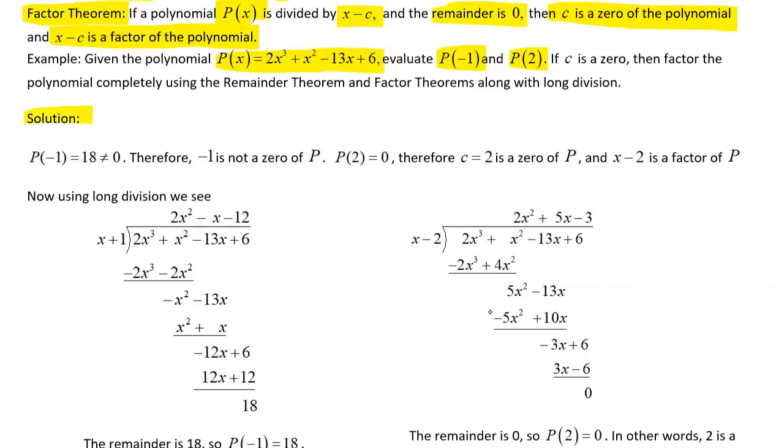So if you look at your solution, first they just plugged in a negative 1 and they got an 18, and since that's not equal to 0, then negative 1 is not a zero of p.